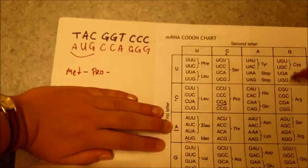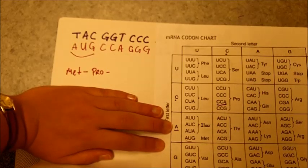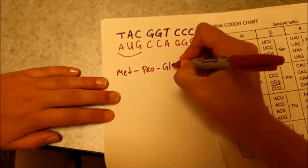G, G, G. That's an easy one. G, G, G. Find it on the chart. Glycine, G, L, Y.